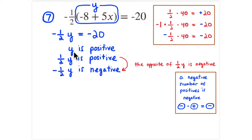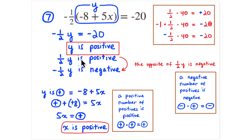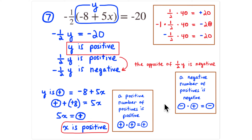Since y is positive and y equals negative eight plus 5x, we add positive eight to both sides. Adding positives to positives only makes things more positive, so 5x is positive. A positive number of positives is positive, so x must be positive. This was a lot of reasoning, but it's worth going through the language and thinking about different ways to look at these problems.